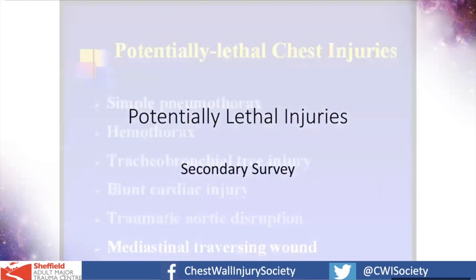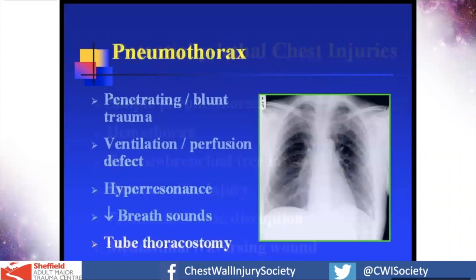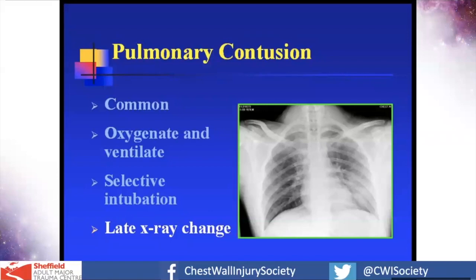In the secondary survey there are potentially lethal injuries including simple pneumothorax, haemothorax, tracheobronchial tree injury, blunt cardiac injury, traumatic aortic dissection, mediastinal traversing wounds, and others. Simple pneumothorax is relatively easily treated once recognised, with a chest drain. Haemothorax should be recognised with radiology. Pulmonary contusions can be seen as well — in the early days of ATLS, CT use was relatively rare, whereas now finding pulmonary contusions on CT scans is very common indeed.